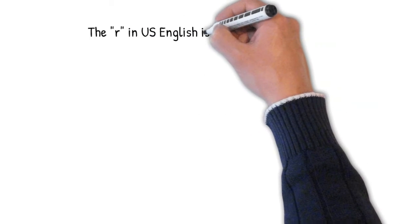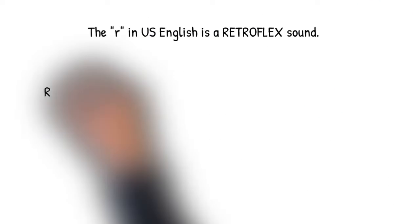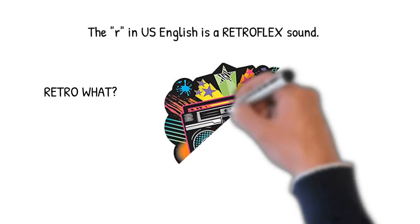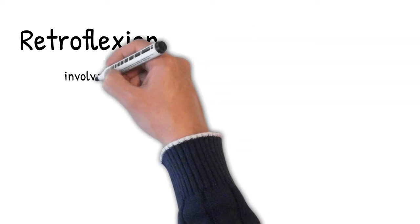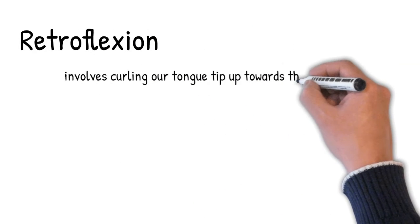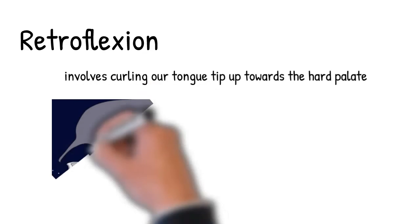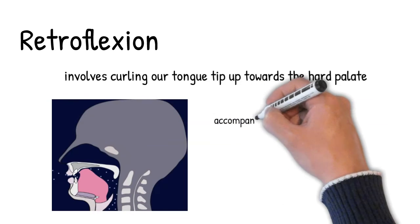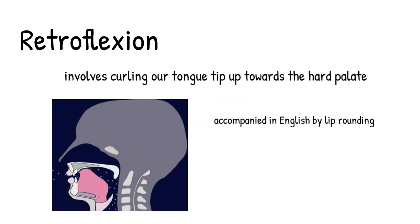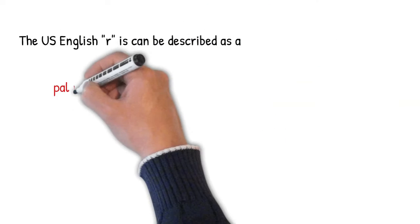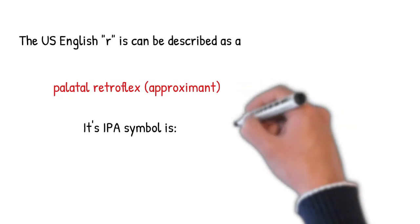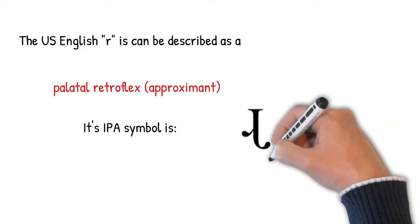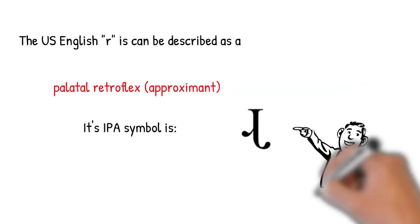The R in American English is what's called a retroflex sound. Retroflex. We make retroflex sounds by curling our tongue tip up and back. Our retroflex R is made by curling the tongue tip back towards the hard palate. And if you think about how you make an R sound, you'll probably also notice that you're rounding your lips at the same time. The R in American English can be described as a palatal retroflex or a palatal retroflex approximant. Here's its IPA symbol. It's an upside down R with a rightward pointing tail.